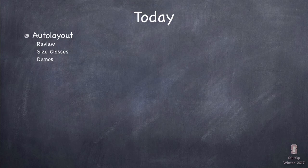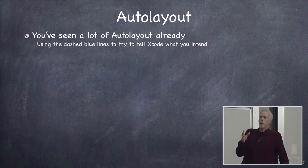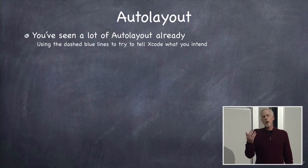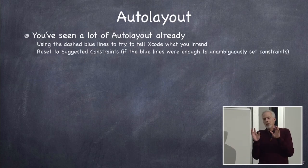I'm going to review a little bit of what we already know about Auto Layout, then move on to a very important part called Size Classes, and we'll demo everything as usual. So what have you seen in Auto Layout already? Well, you know about the dashed blue lines — when you drag things out, move them around, and make those dashed blue lines appear, you know that it helps Xcode when you want to do reset to suggested constraints.